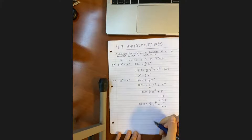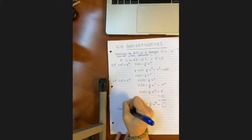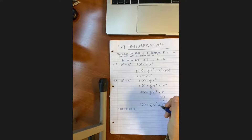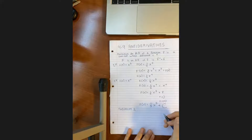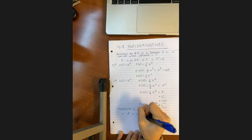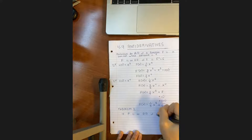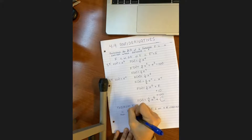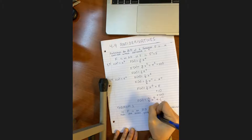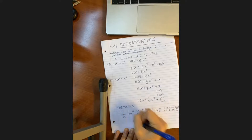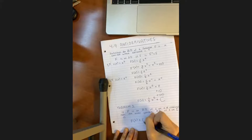That brings us to Theorem 1, which says: if capital F is an anti-derivative of f on an interval I, then the most general anti-derivative of f on I is capital F of x plus C — plus any constant C.